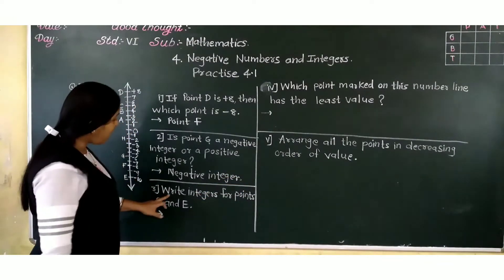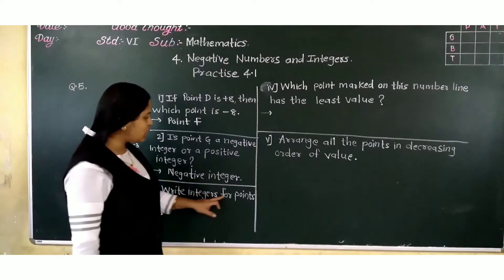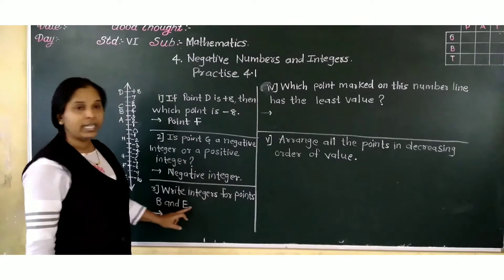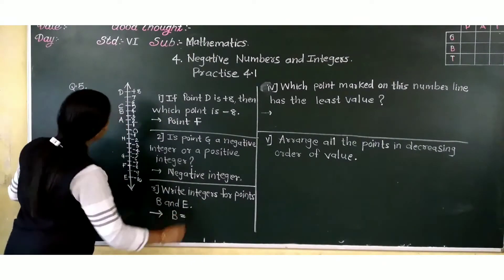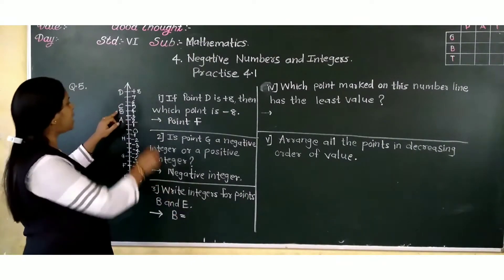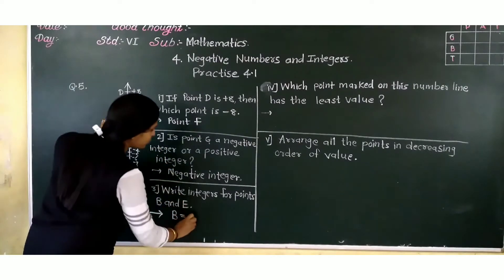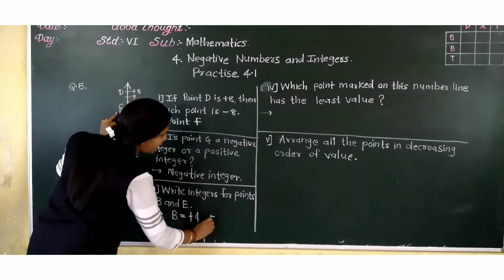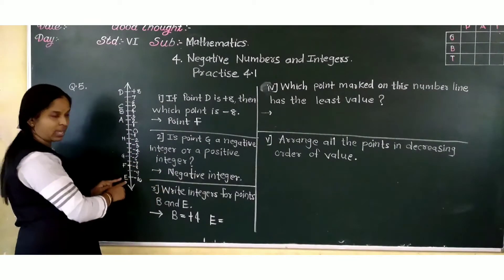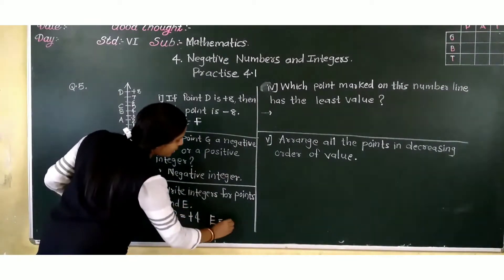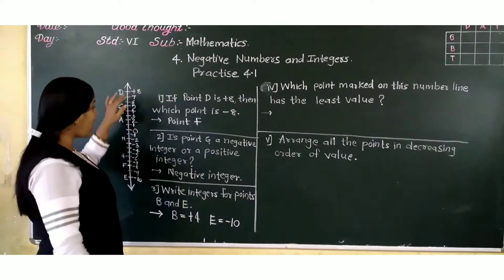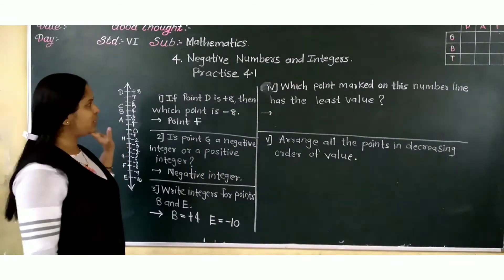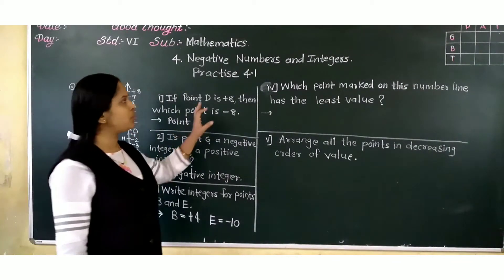Now next question. Write integers for points B and E. For B, which integer is there? Plus 4. And for E, which integer is there? Minus 10. That is why I have taken all the integers first — it is easy then for us to write.